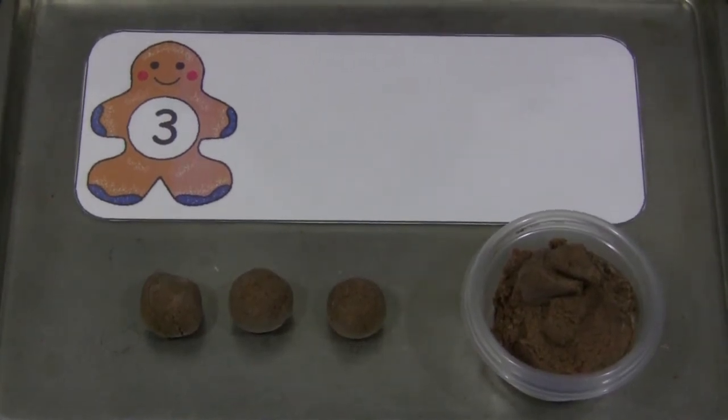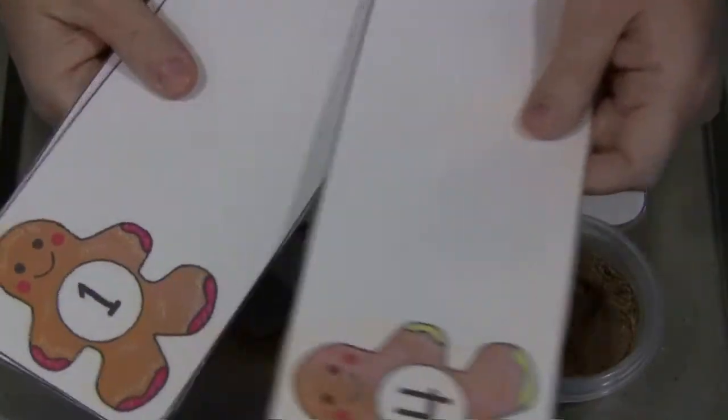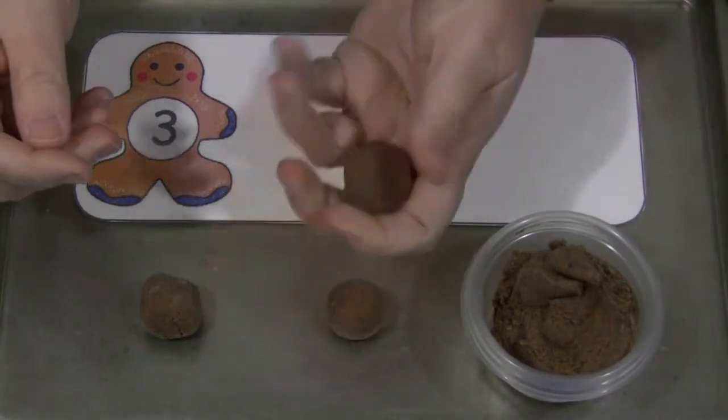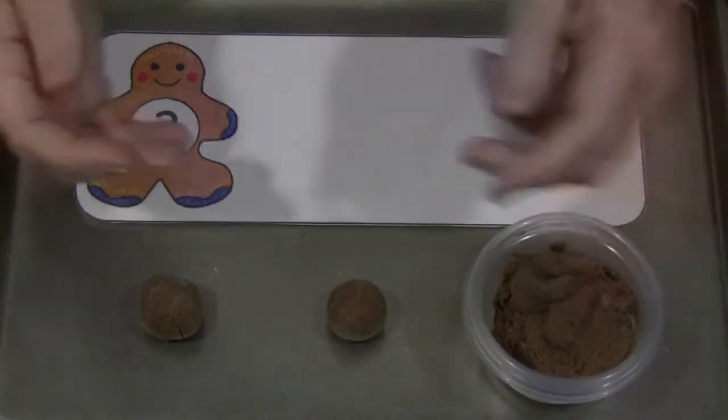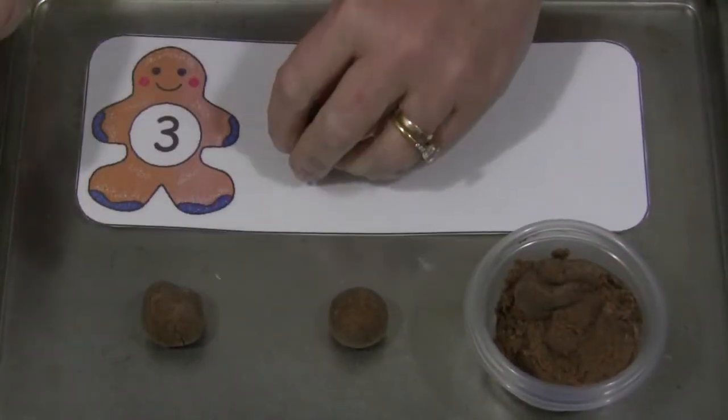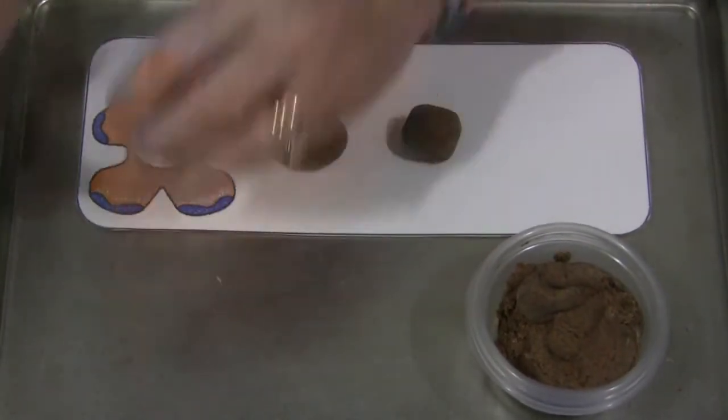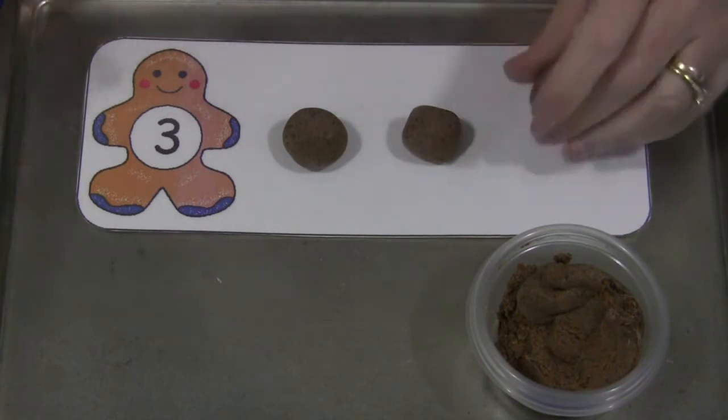The concept is really easy. You just pick one of the cards, put it on the tray or wherever you're going to be having your work surface and then the children would take some Play-Doh out and roll the correct number of Play-Doh into balls and then set that on the mat. This one has three, so we're going to put three on.